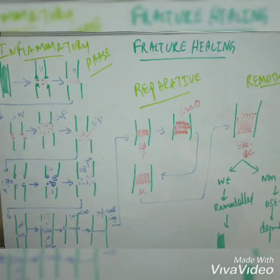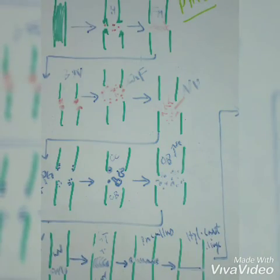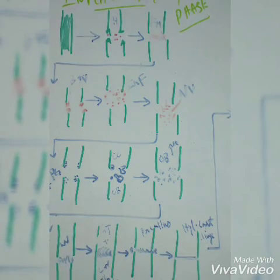First the fracture happens, then hematoma and hemorrhage formation at the site of fracture, then fibrin meshwork formation, bone necrosis, inflammatory infiltrate being formed there, neovascularization, and then osteoprogenitor cell activation.